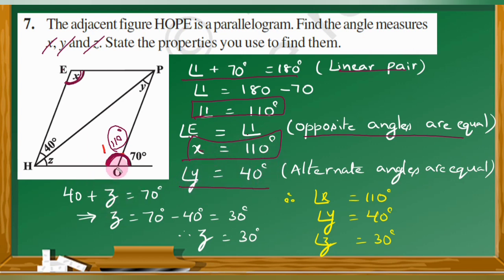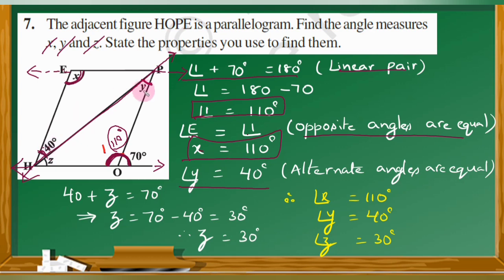EP and HO are parallel lines. If we draw a transversal, we get two alternate angles. Alternate angles are always equal. The given angle is 40 degrees, so angle Y is equal to 40 degrees.